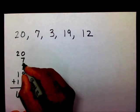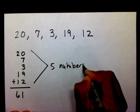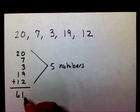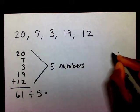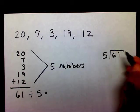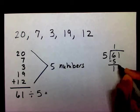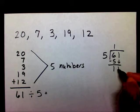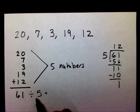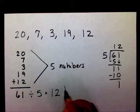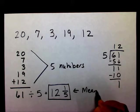How many numbers do I have? 1, 2, 3, 4, 5. 5 numbers. So what I'm going to do, I'm going to say 61 divided by 5. Well, what is 61 divided by 5? I'm going to do my division over here. 5 will go into 6 one time. I'm going to subtract. Bring down my 1. 5 goes into 11 two times. Remainder of 1. So 61 divided by 5 is 12 and 1 fifth. So this is my mean, or I can say it's my average.